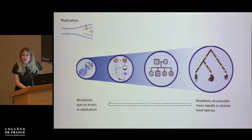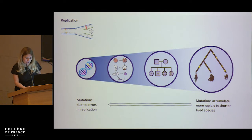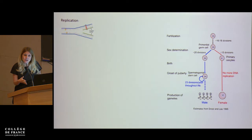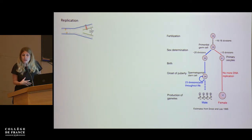The strongest line of evidence comes not from comparing different mammalian species, but from comparing human males and females. This comparison is informative because the developmental trajectories of male and female germlines are so markedly different.